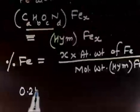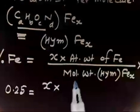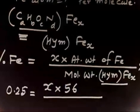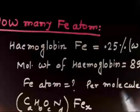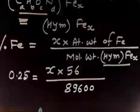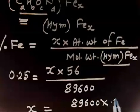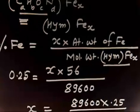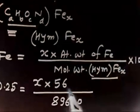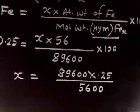So, 0.25 equals X (which we have to find out) times the atomic weight of iron, which is 56, divided by the molecular weight of hemoglobin — which is given in the question as 89600 — times 100. So the denominator becomes 56 times 100, which is 5600. Now let us calculate this value: X = 89600 × 0.25 / 5600.